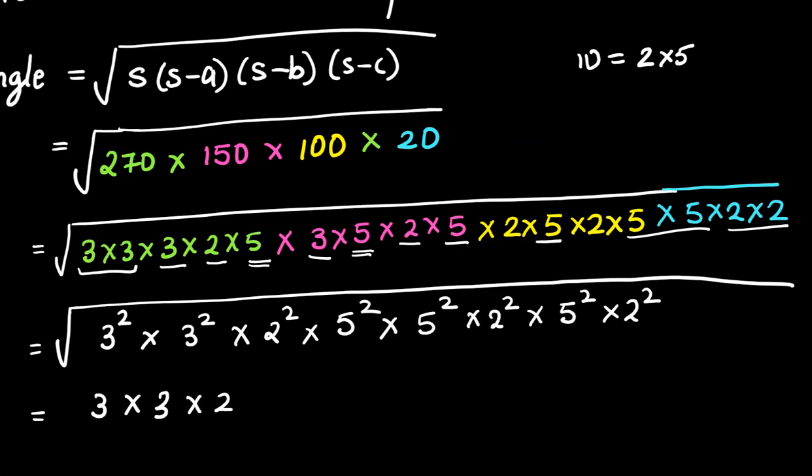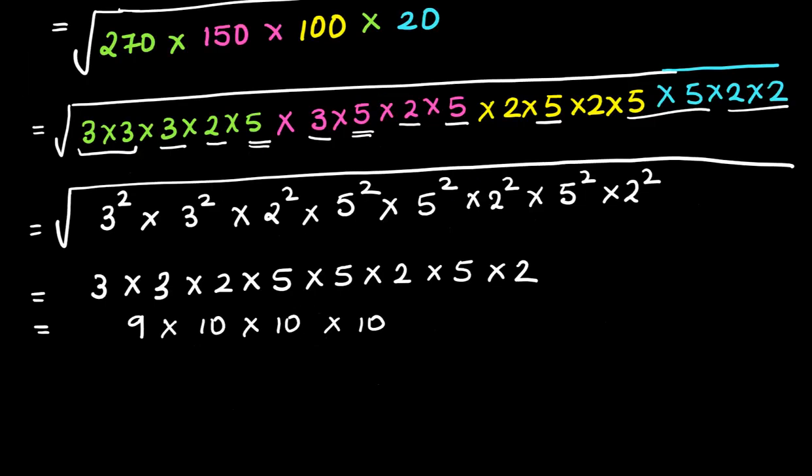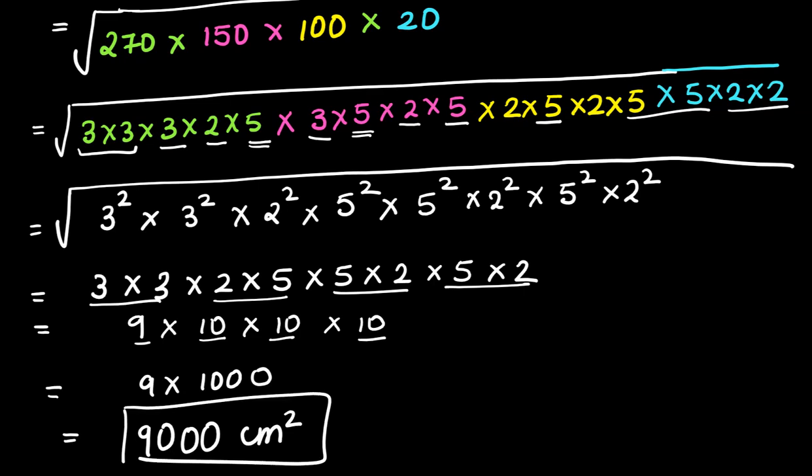Now it's easier for us to calculate. 9 times 10 cube is 1000, so 1000 times 9 will be 9000 cm squared. So this will be my answer.